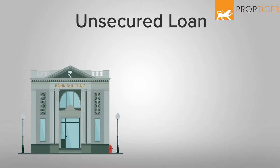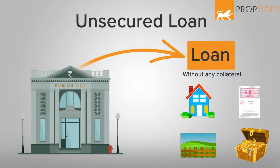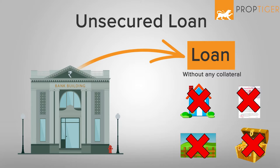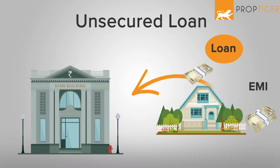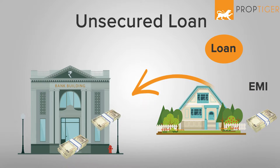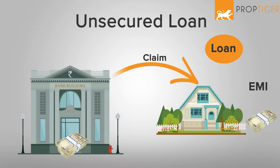Unsecured Loans. As the name suggests, an unsecured loan is such a loan which a bank offers a borrower without keeping any collateral. When you go for a home loan, for instance, your property is the collateral against which the bank offers you a loan. In case of a default, the bank has the right to claim the said property. This is why a home loan does not fall in the category of an unsecured loan.